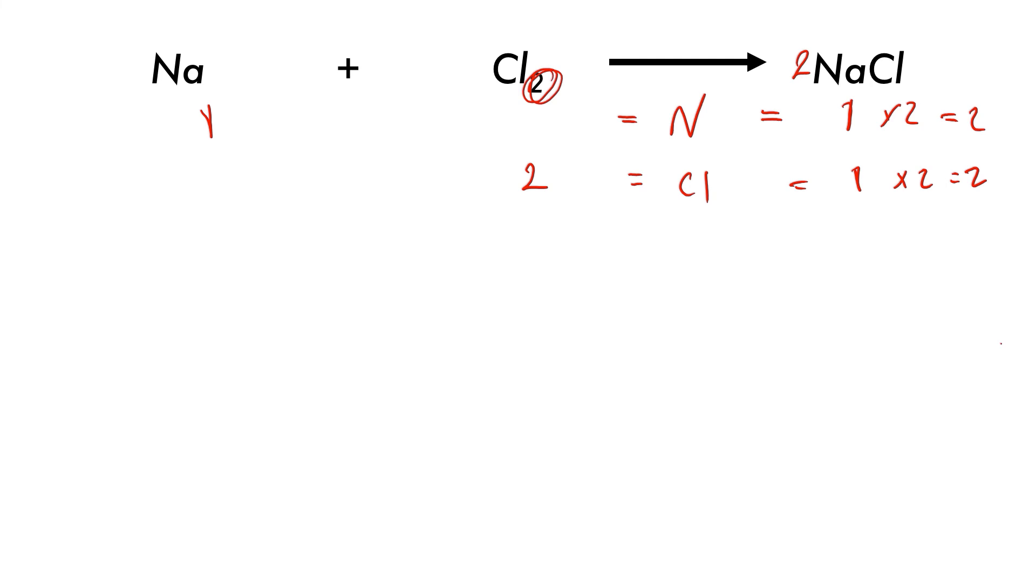But we do not have the right number of sodiums, which means that we need one more sodium. So we need to multiply this by two and we end up with two sodiums. So then we have two sodiums and two chlorines on both sides. That would be 2Na plus Cl2 gives us 2NaCl. That's how we balance this reaction.